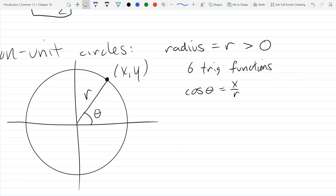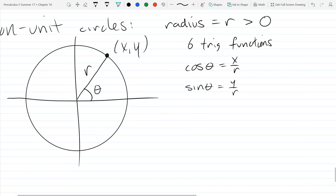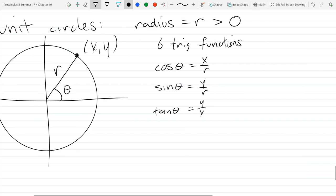Something very similar for sine—it's not just y, but y over r. And if r is 1, this is just y. Tangent is still y over x, that doesn't change. And then our three reciprocals: secant is the reciprocal of x over r, which is r over x. Cosecant is r over y, and cotangent is x over y.